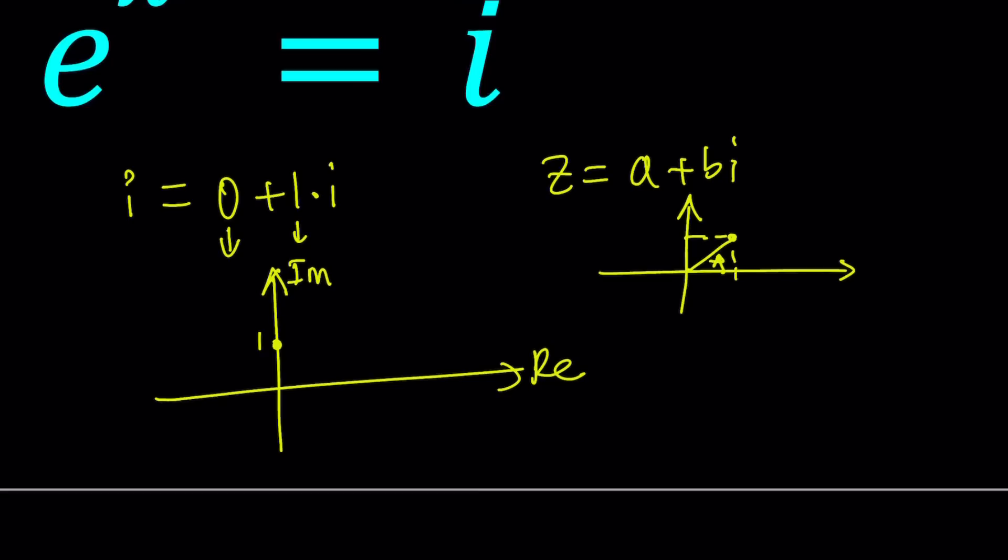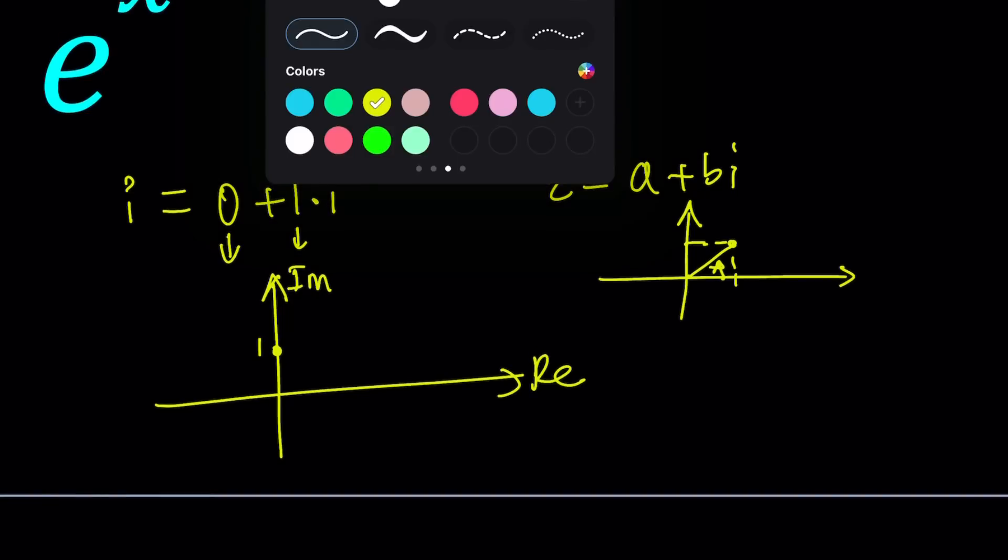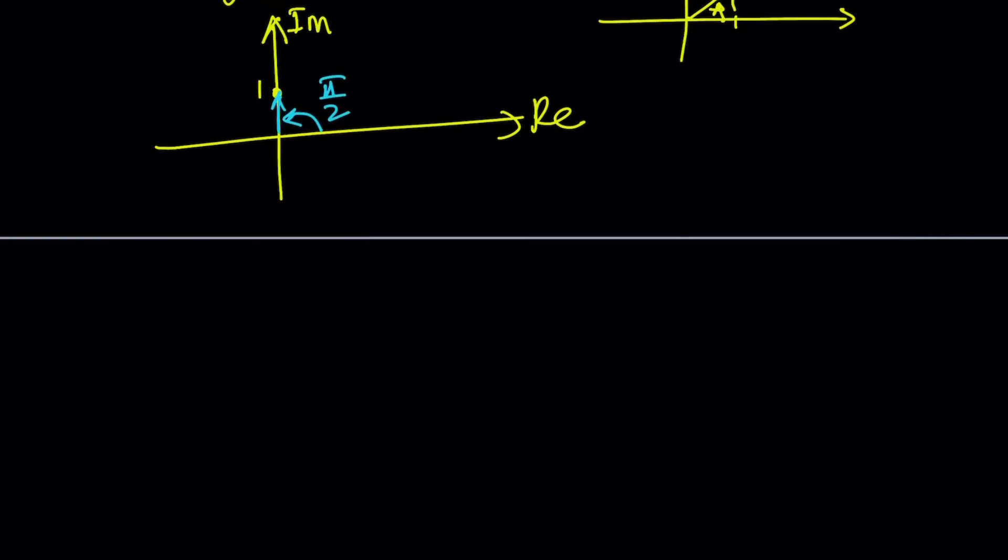So the angle that this number makes with the positive x-axis would be pi over 2. So that's going to be our argument, and we're going to use it to write this in polar and Euler form. First of all, any number z can be written as r times cosine alpha plus i sine alpha, where alpha is the angle, and r is the modulus or the absolute value of our number z.